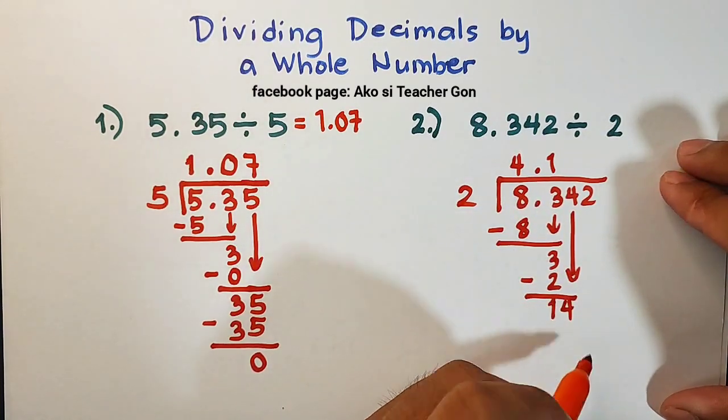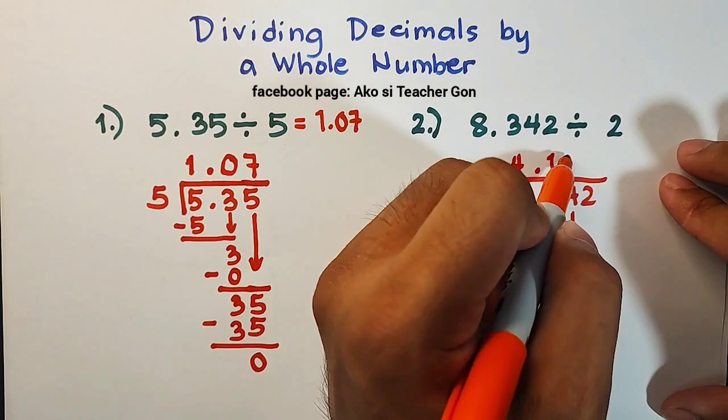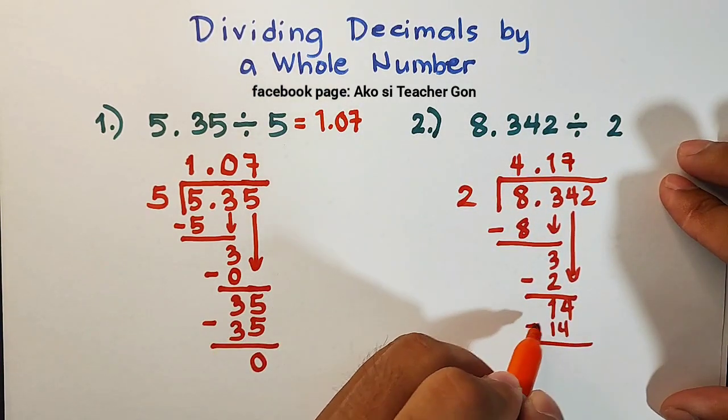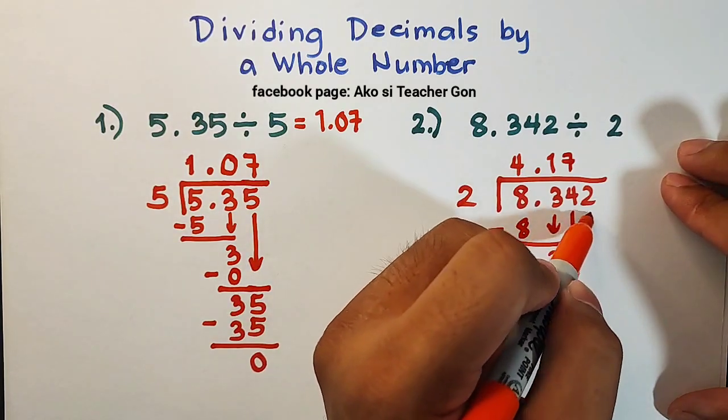Bring down 4. So we have the 14. 14 divided by 2 is 7. And 7 times 2, that is equal to 14. That is 0. When we subtract it, bring down 2.